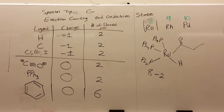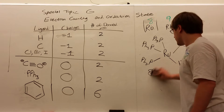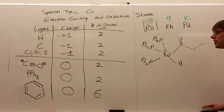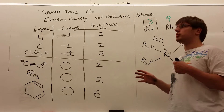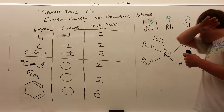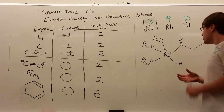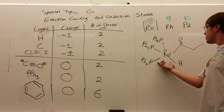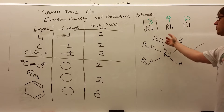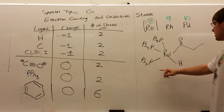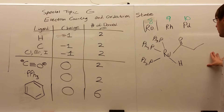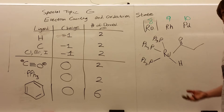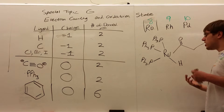We're going to be talking about electron counting and oxidation states in the context of metal reactions. You'll never have to know the actual mechanism of anything from chapter special topic G, but you will have to do some simple math. Looking at this ruthenium complex, it has three PPh3, a hydrogen, and a carbon with a C double bond O. The first thing we want to do is calculate its oxidation state.